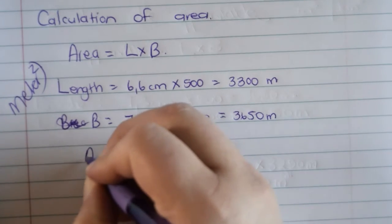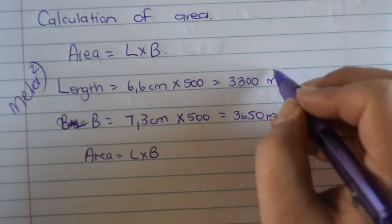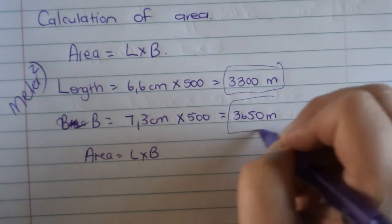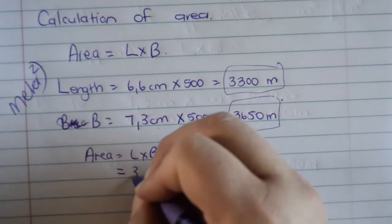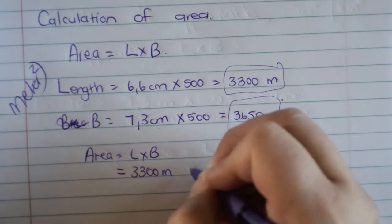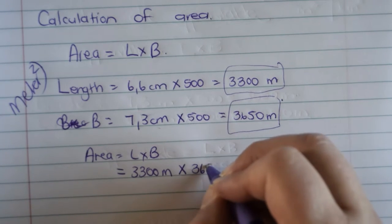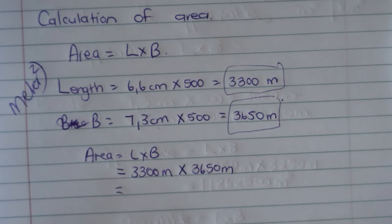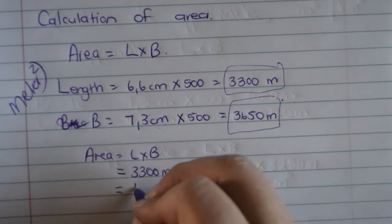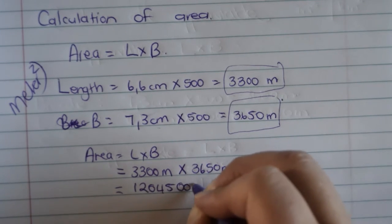Okay. Now we get back to the formula. You write it again. You say area equals length times breadth. Now you take the answer and you substitute. So you say 3,300 meters multiplied by 3,650 meters. And you will get the answer of 12,045,123.